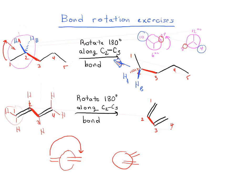This nomenclature doesn't become important until much later, but store it in the back of your mind: the original conformation is called S-trans, because the alkenes are trans along this sigma bond — the S stands for sigma. After rotation, this is called S-cis, where the alkenes are on the same side of the sigma bond. These are conformations we can freely rotate between, and this becomes important in a very significant reaction in your Organic Chemistry 2 course.